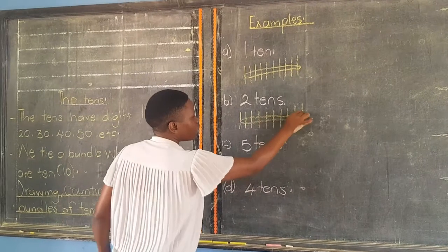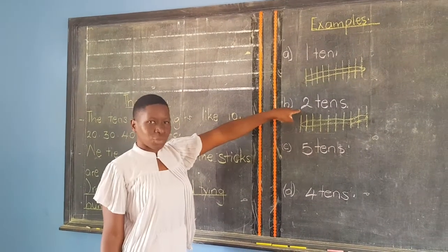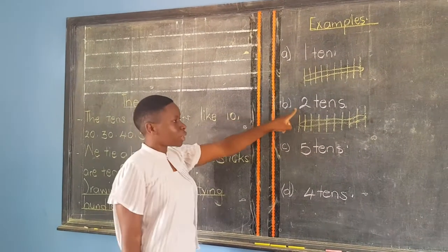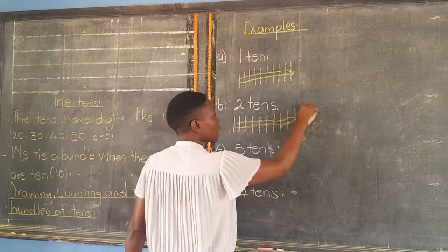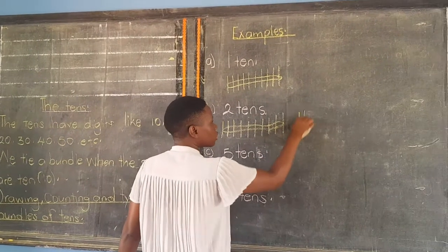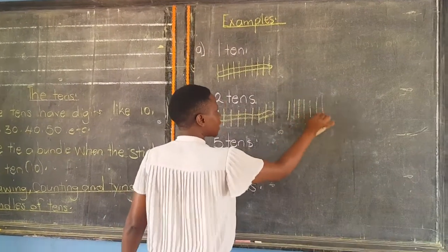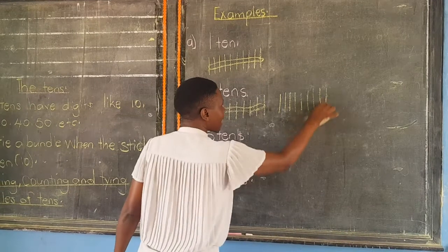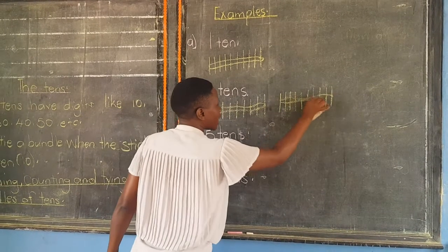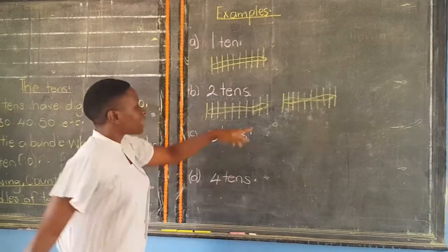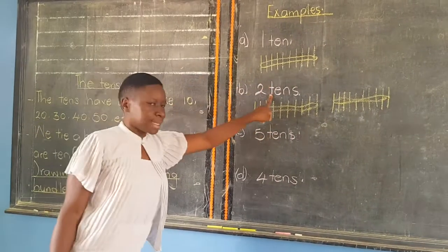If we stop here, your answer is wrong. We are talking about two bundles. We need to draw another bundle, which is one, two, three, four, five, six, seven, eight, nine, ten. You tie this bundle. This one stands for two tens.